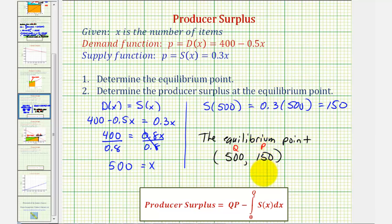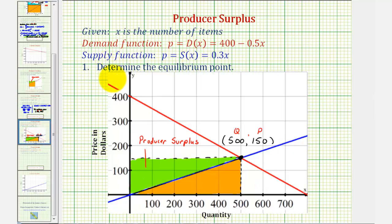Now before we find the producer's surplus, let's look at the graph of d of x and s of x on the coordinate plane. The red line is the demand function d of x, and the blue line is the supply function s of x. We just found this point here, the point of equilibrium, where the quantity is 500 and the price is 150 dollars. And this green area here is the producer's surplus.